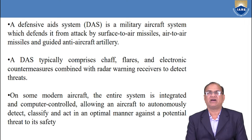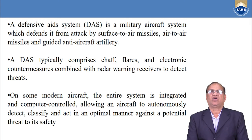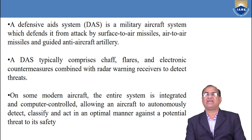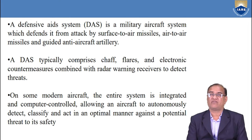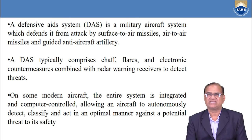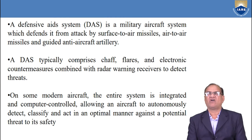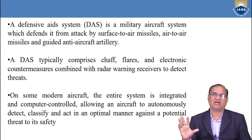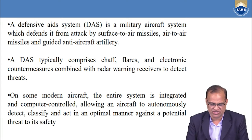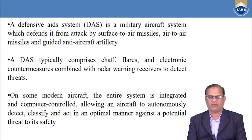A Defensive Aid System (DASH) is a military aircraft system which defends the aircraft from attack by surface-to-air missiles, air-to-air missiles, and guided anti-aircraft artillery. A DASH typically comprises safe flares and electronic countermeasures combined with a radar warning receiver to detect threats. When a missile is coming near the aircraft, it will cue the flares, confusing the missile. On some modern aircraft the entire system is integrated and computer-controlled, allowing the aircraft to autonomously detect, classify, and act in an optimal manner against a potential threat.